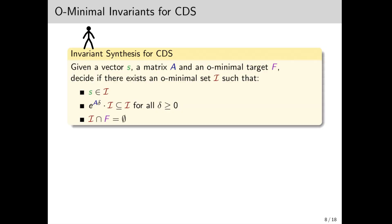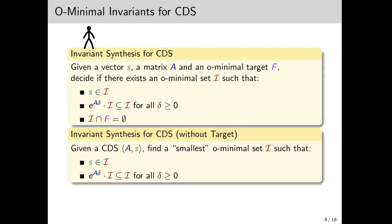We can now formulate the problem we study. Given a vector s, a matrix A, and an O-minimal target F, we want to decide if there exists an O-minimal set I that is invariant and is disjoint from the target. But for starters, we're actually going to consider a variant of this problem where we don't have a target. So we're just searching for some O-minimal invariant, but in order to make it interesting, we want it to be minimal in some sense. So we can't just take the entire space as an invariant, for example.